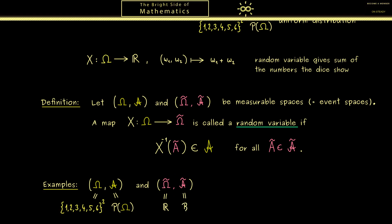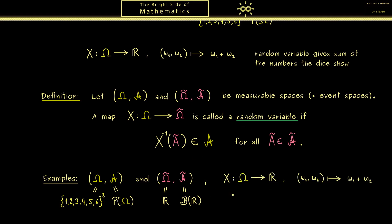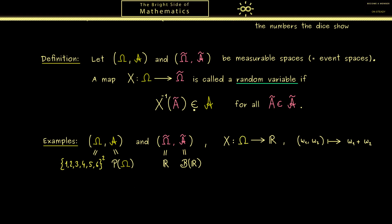But usually when we have the real number line, we would take the Borel sigma algebra. Therefore we also do this here. And now I can ask you: is this map from before, this X, actually a random variable? At first glance it seems to be that we have to check a lot, because we need to check all the pre-images here. However, please recall the sigma algebra A here is the whole power set. Hence the condition we have to satisfy just tells us that the pre-image of any Borel set Ã is a subset of Ω, which is of course trivially fulfilled.